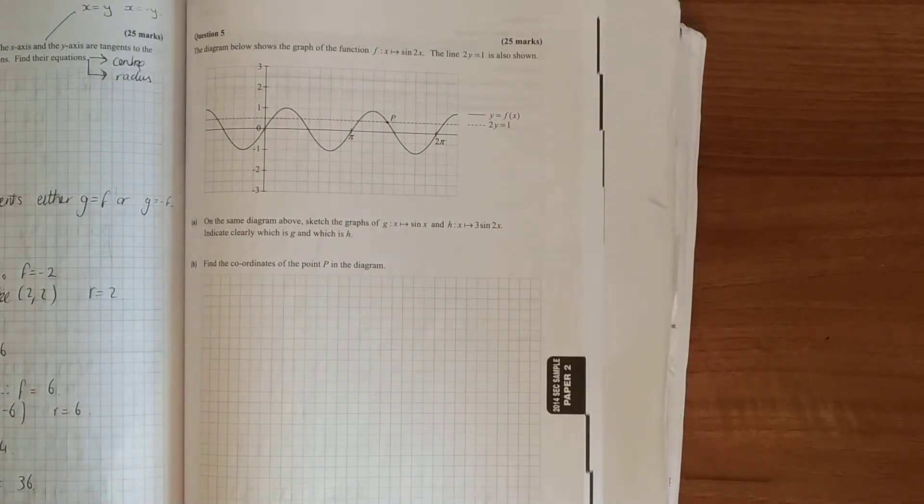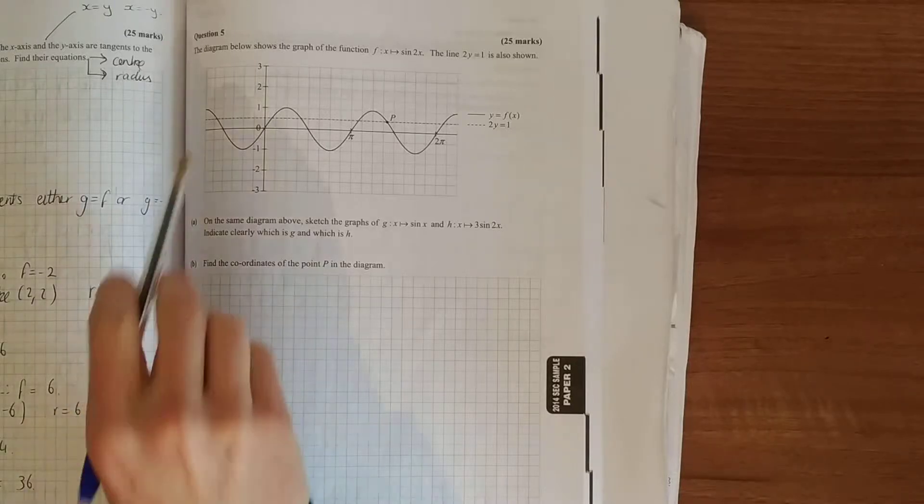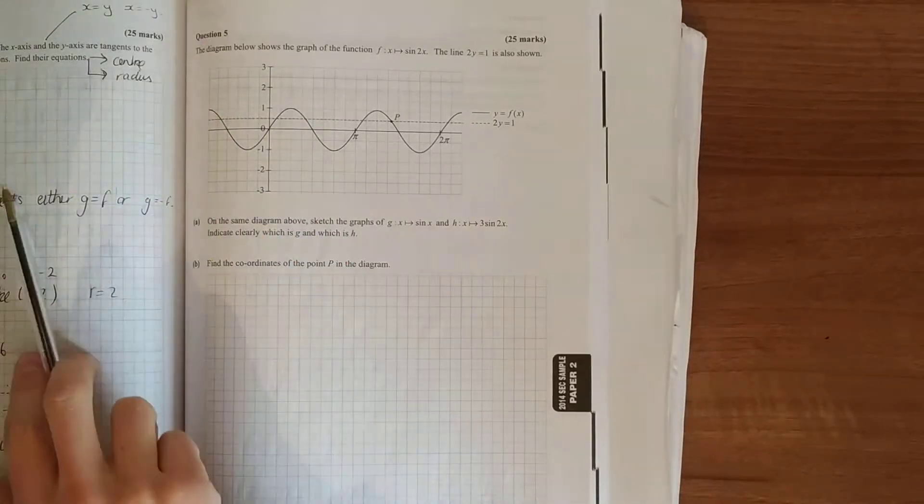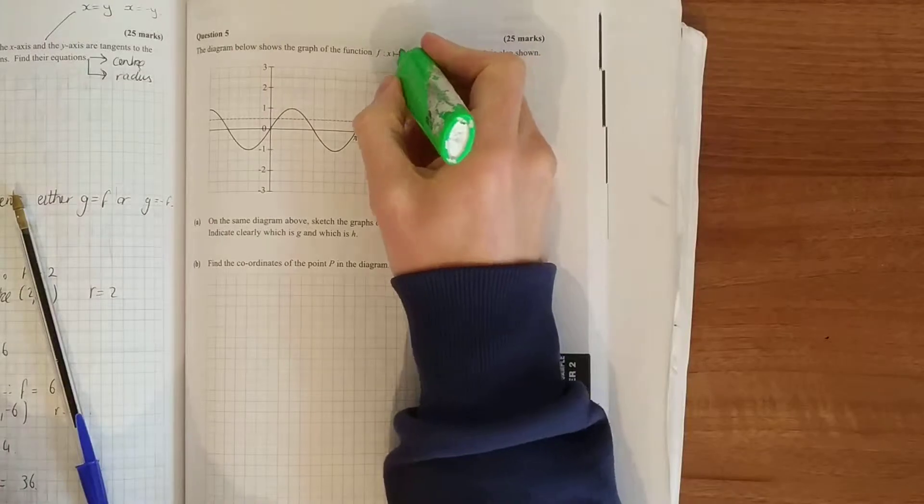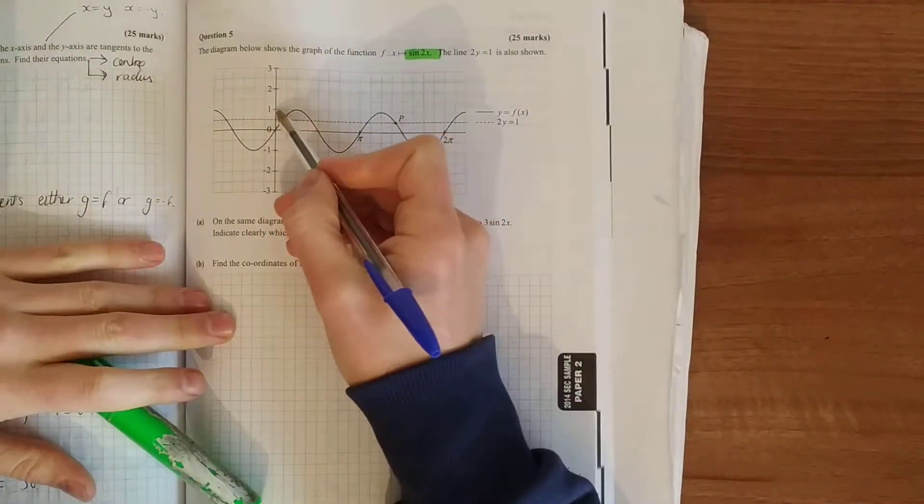In 2014 SEC sample paper 2 question 5, another question concerning trig functions. The diagram below shows the graph of the function sine 2x. There's no number in front, so the range goes between 1 and minus 1.